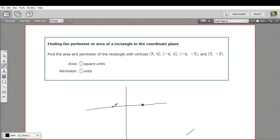And then negative 4, negative 5 down here, and 5, negative 5 down here. So we do have a rectangle.